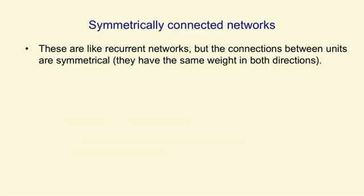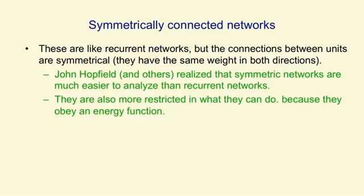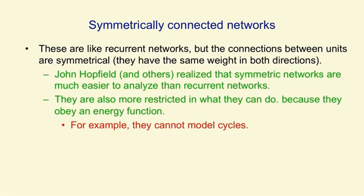Quite different from recurrent nets are symmetrically connected networks. In these, the connections between units have the same weight in both directions. John Hopfield and others realised that symmetric networks are much easier to analyse than recurrent networks. This is mainly because they're more restricted in what they can do, and that's because they obey an energy function. So they can't model cycles — you can't get back to where you started in one of these symmetric networks.